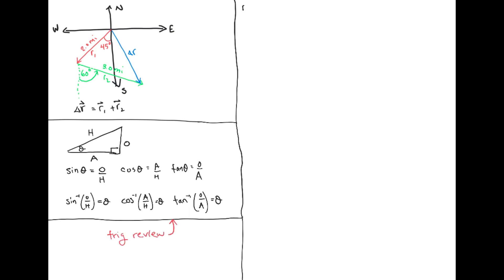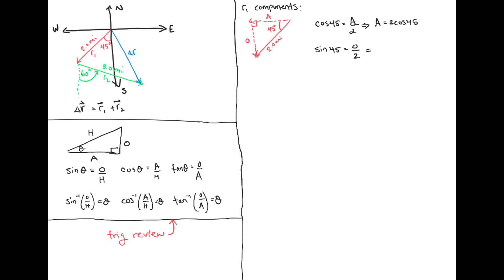Let's take a look at r1 and find the components. The vector along with its components form a right triangle. The adjacent side may be found by noting that cosine 45 is equal to adjacent over 2, so a is equal to 2 cosine 45. Similarly, the opposite side may be found by noting that sine 45 is equal to o over 2, which means o is 2 sine 45. Notice that the components of r1 are both negative since the x component goes to the left and the y component goes down. So r1 may be written in component form as negative 2 cosine 45 i-hat minus 2 sine 45 j-hat.